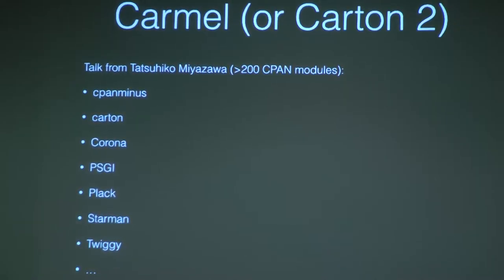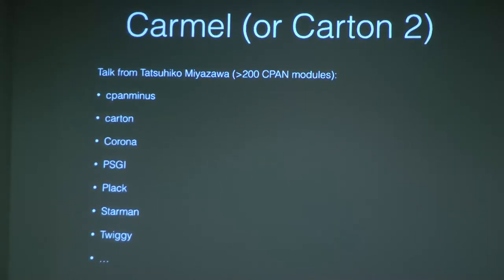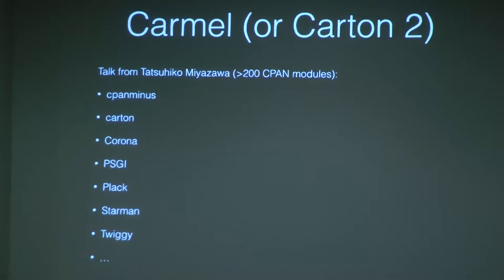You've probably heard of Miyagawa, who is very productive on CPAN with many commonly used modules — CPAN::Minus, PSGI, Plack, Starman. You may know or be considering Carton. The idea of Carton is to package your own module versions and redeploy the same version later in a different environment or production, ensuring you use the same version. One main disadvantage of Carton is that it's slow — you always need to recompile the modules.